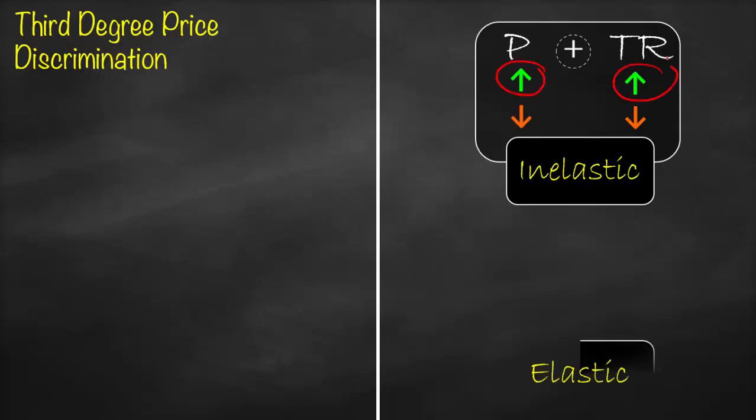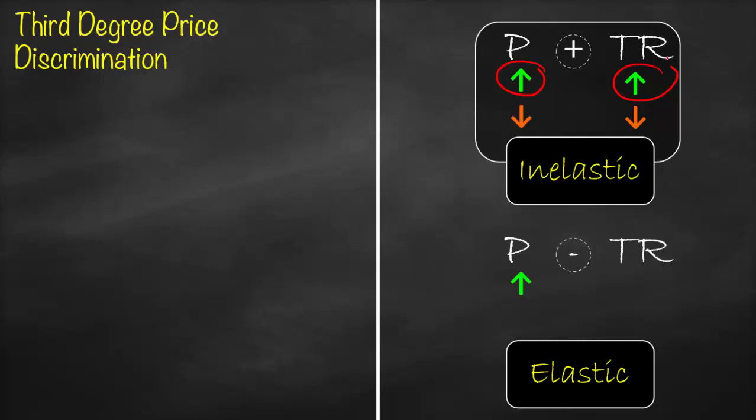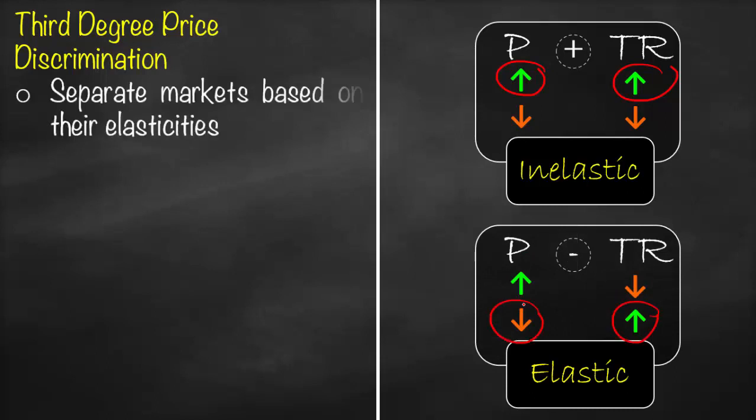You have another group of customers which is elastic. What is the relationship between price and total revenue for elastic individuals? It's a negative relationship. If price goes up, total revenue will go down. If price goes down, total revenue will go up. My target is to maximize total revenue. Therefore what shall I do? Decrease the price.